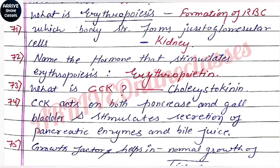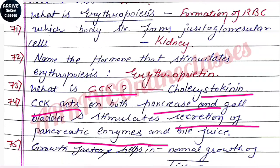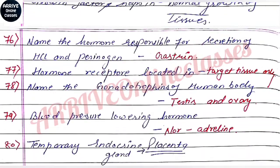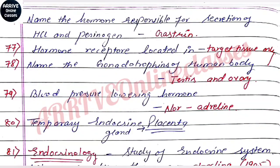CCK stands for Cholecystokinin. It acts on both the pancreas and gallbladder and stimulates the excretion of pancreatic enzymes and bile juice. Growth factor helps in the normal growth of tissues. The hormone responsible for secretion of HCl and pepsinogen is gastrin.